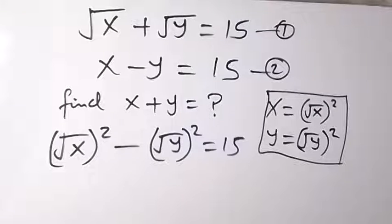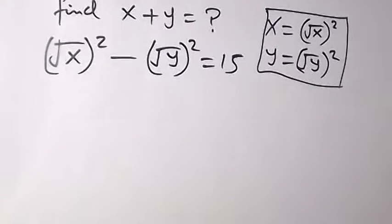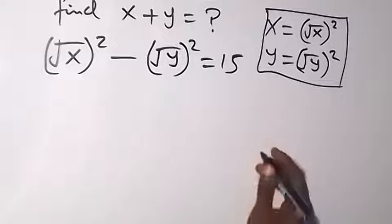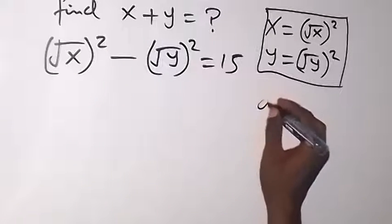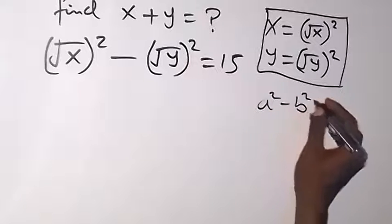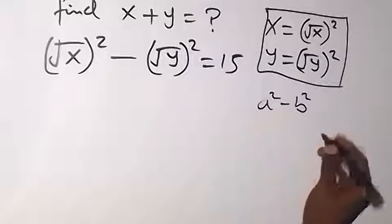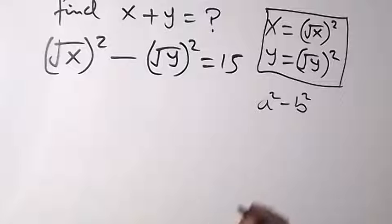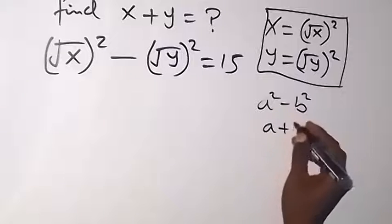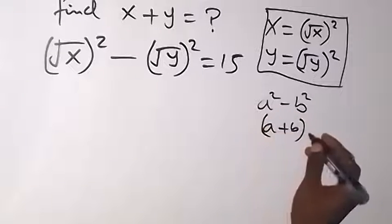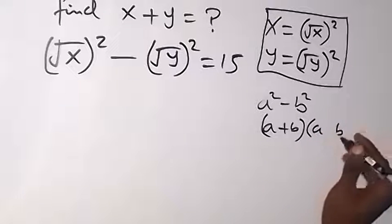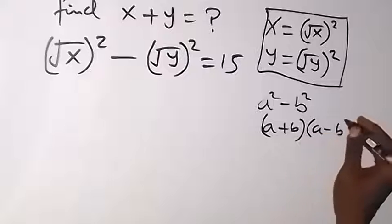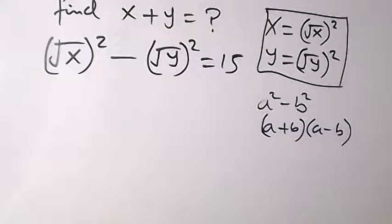Then from here, when we apply what is known as difference of two squares, we can see that this is a square, this is a square, and we have a difference. When we have a squared minus b squared, this can be written as a plus b multiplied by a minus b — that's from difference of two squares.